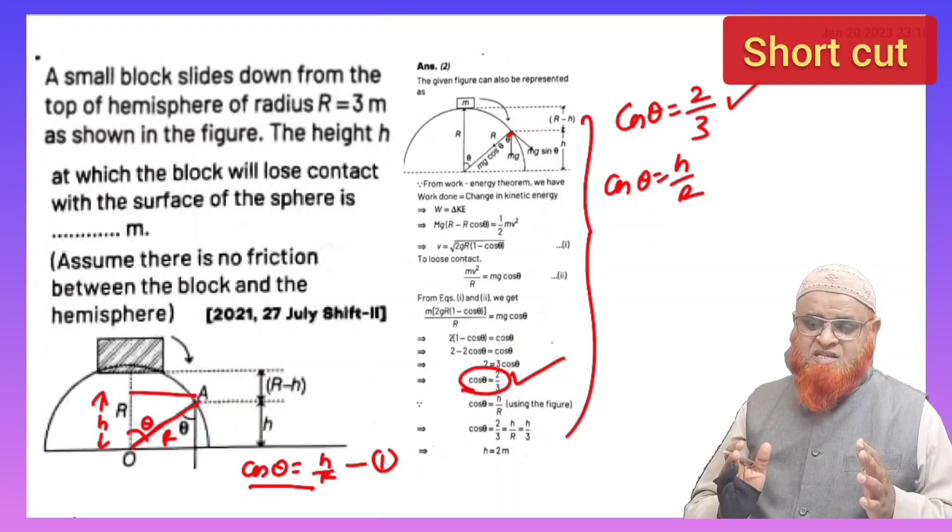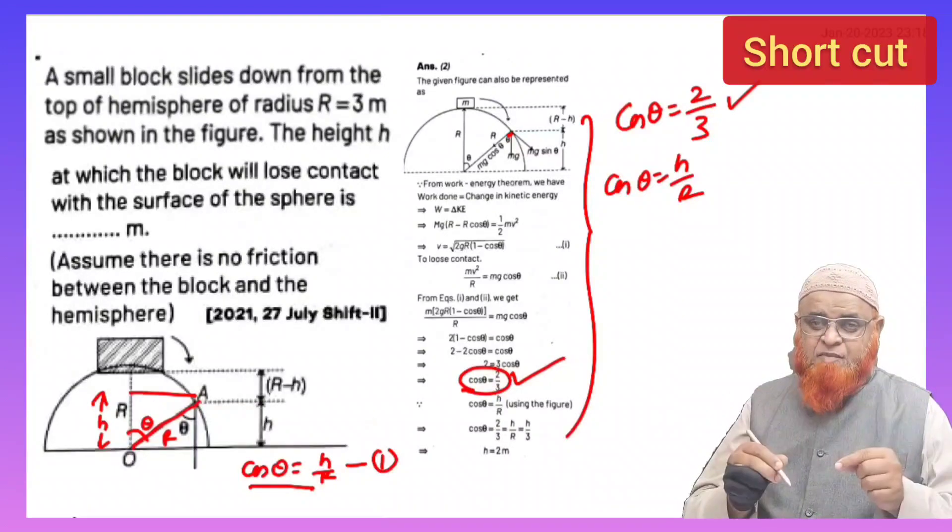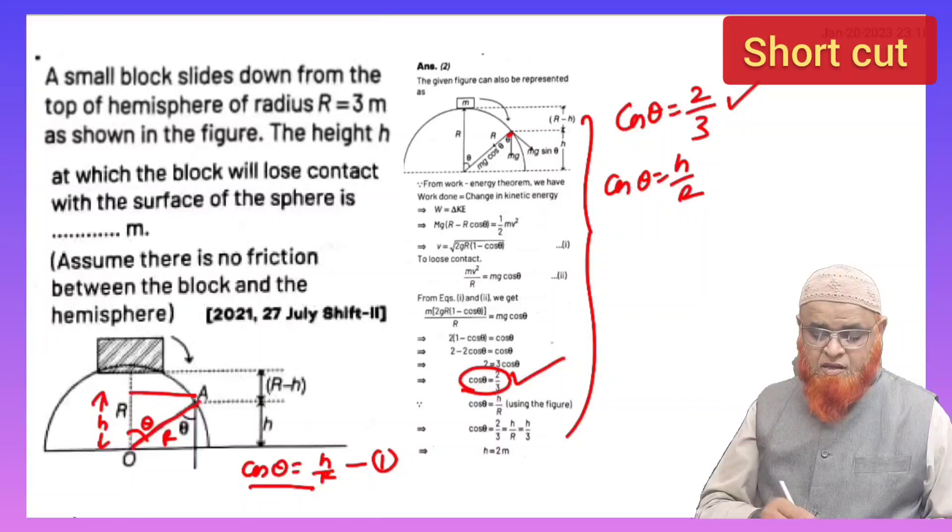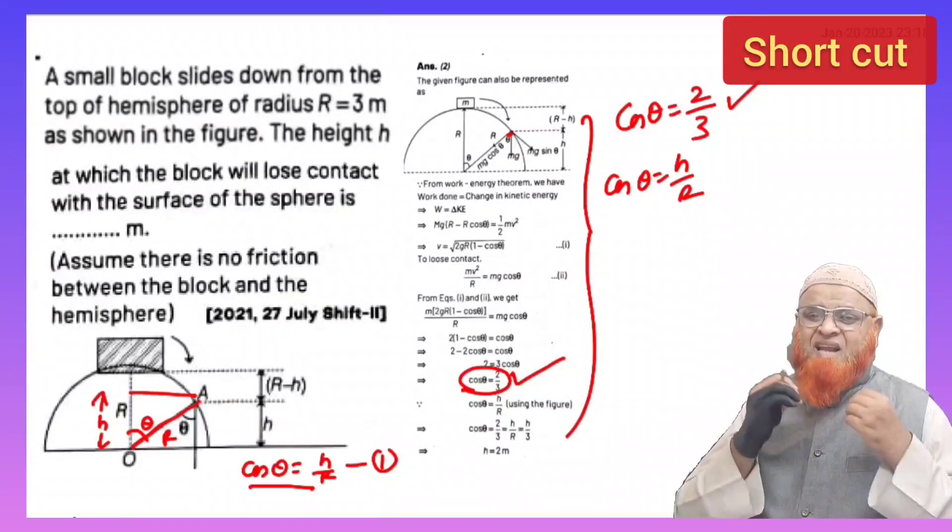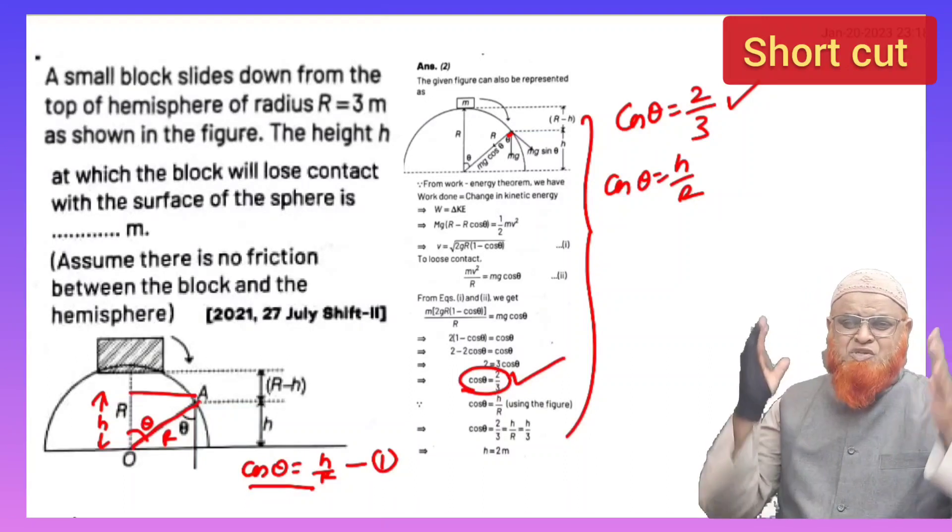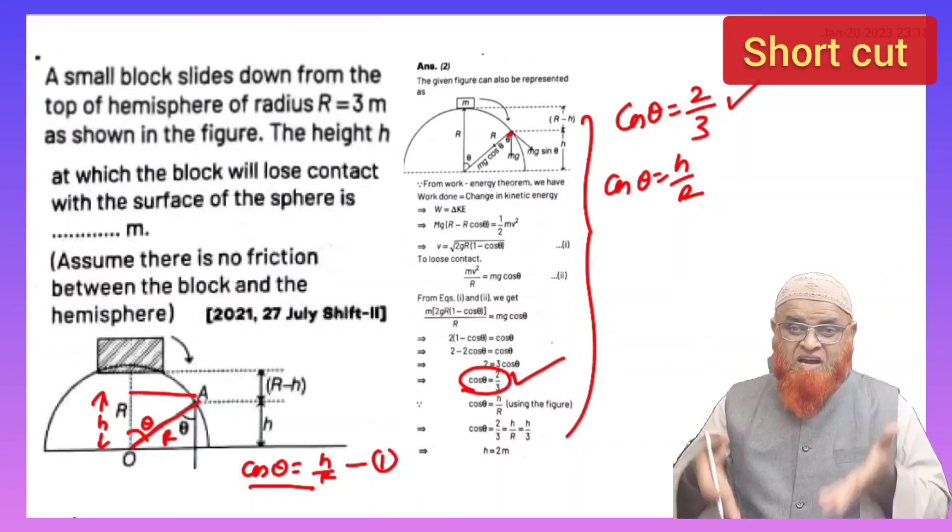So I can just write cos θ is equal to h by r. There are two formulas for cos θ: that is cos θ for this type of cases is 2 by 3, and cos θ is h by r according to the diagram given here. So make them equal and get the answer in fraction of seconds.